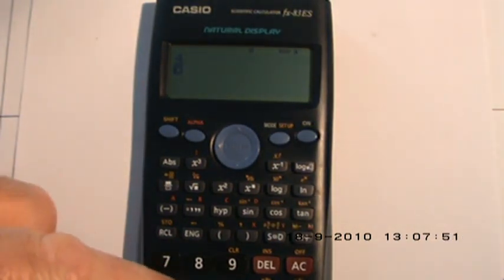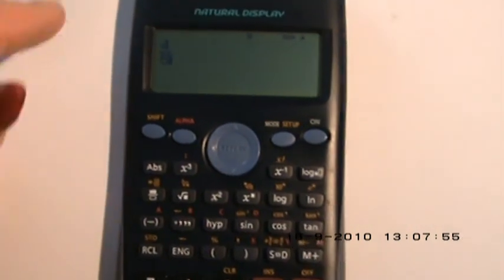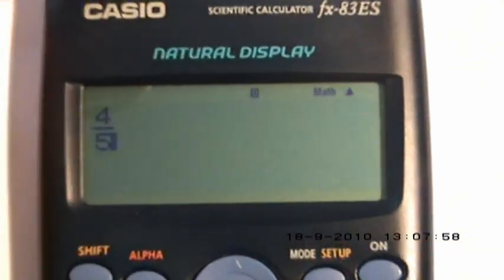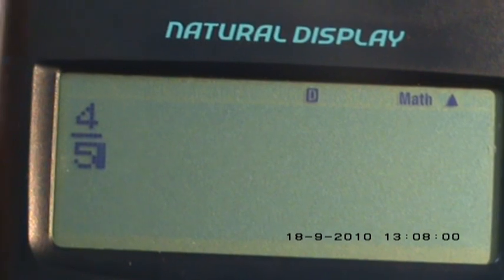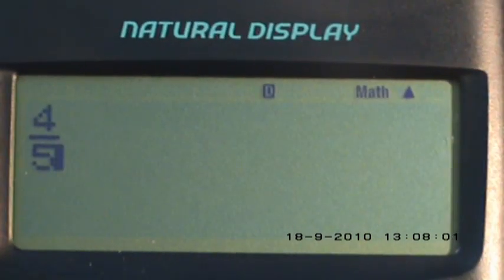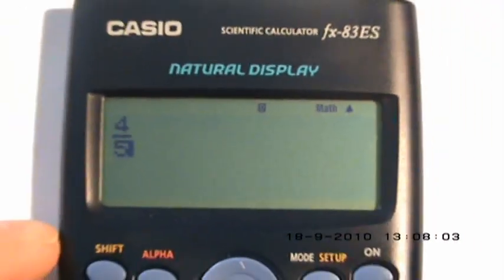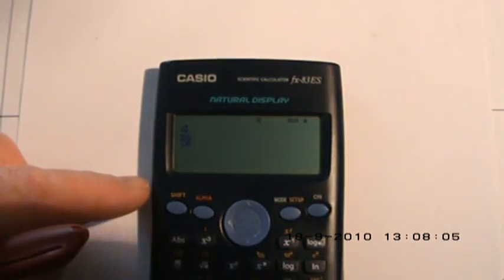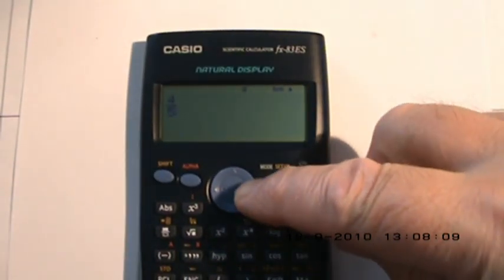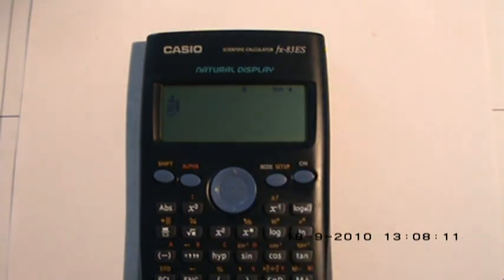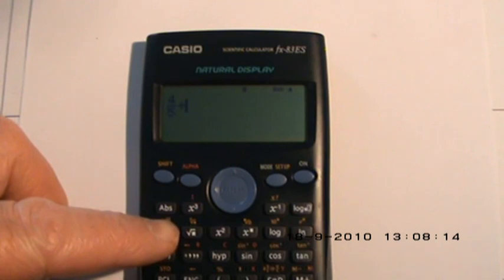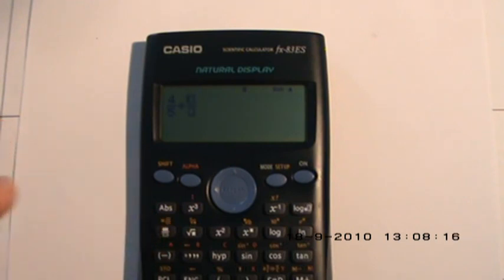We'll zoom in to show you - the screen shows four over five. Now you press the right toggle button to press the plus. Again, you press the fraction button, and we're going to have two over three, so you press the 2.